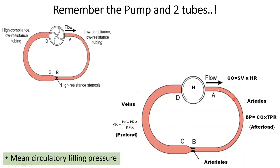The heart provides the delta P — the pressure difference — that drives circulation. Before turning the heart on, if you fill the entire system with blood to the point where vessels are open but not over- or under-filled — patent and taut — and then measure the pressure, that reading is called the mean circulatory filling pressure (MCFP).